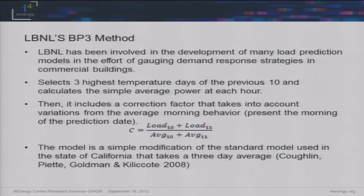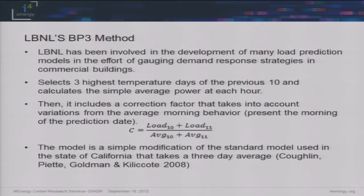LBNL's Marianne Piette and Sila have worked on a lot of different model development. They have a paper with nine or ten models that have been developed, and they go through calculating the error, bias, and similar metrics. So I felt like keeping with that strategy for assessing our model made sense. The BP3 method selects the three highest temperature days of the previous ten and calculates a simple average of power for each hour. Then they have a morning correction factor which uses the demand at 10 a.m. and 11 a.m. of that morning, adds those together, and divides by the average of 10 and 11 for those three highest temperature days. It's a simple modification of the standard model, but the correction factor makes it better.